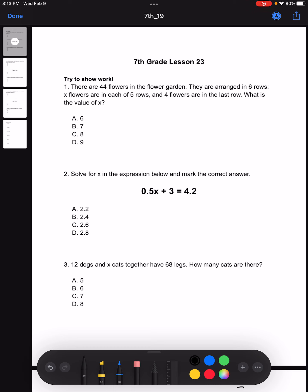Well, we know that there are a total of 44 flowers and we also know that there are a total of four flowers in the last row. In addition, we also know that there are X flowers in each of five rows. So there are five rows of X flowers. Converting this word problem into an algebraic equation, we get a pretty simple problem we can solve for.